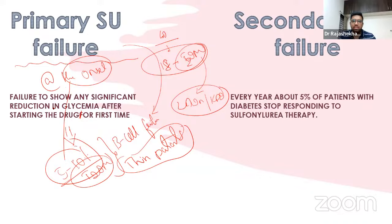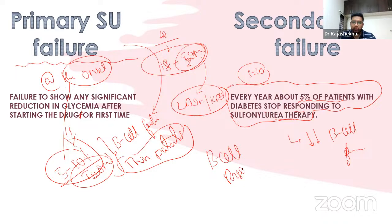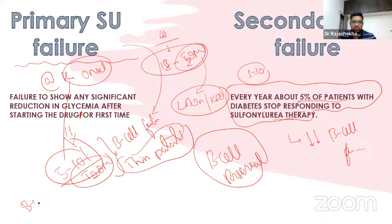Secondary sulfonylurea failure affects roughly 5 patients per year per 100 on therapy, due to decreasing beta cell function. This is why the initial OAD management eventually leads to insulin in many patients. Beta cell preservation has therefore become a very important consideration. Sulfonylureas do not have any beta cell preservation action.